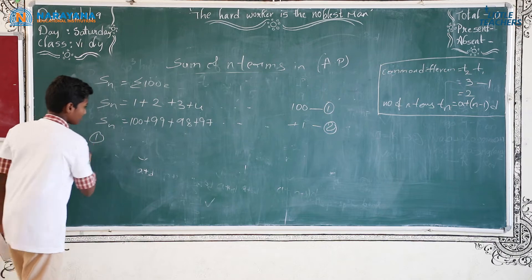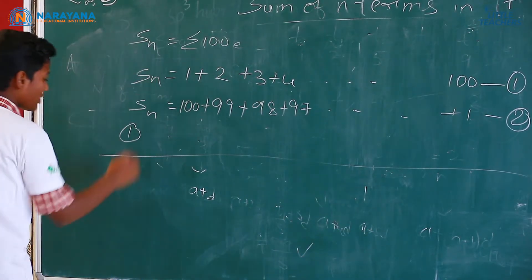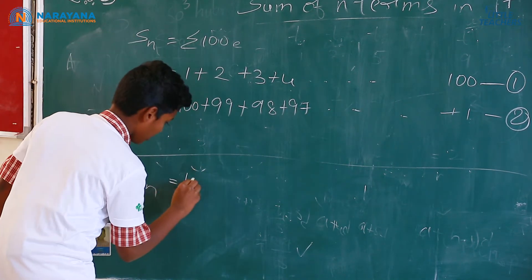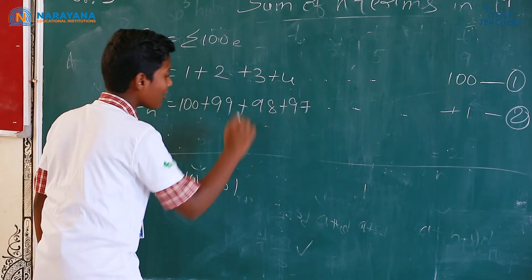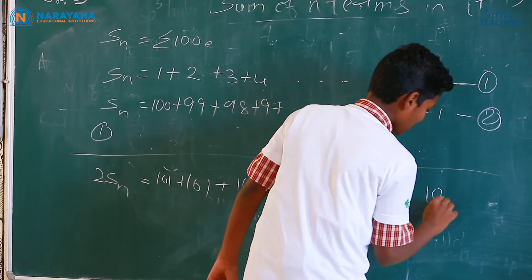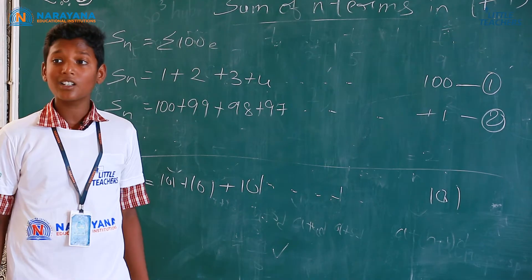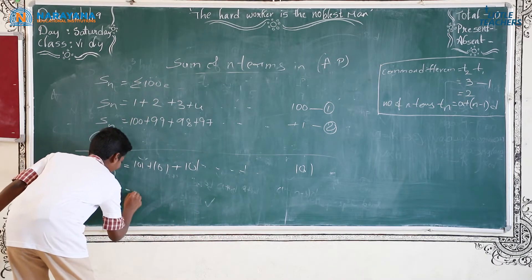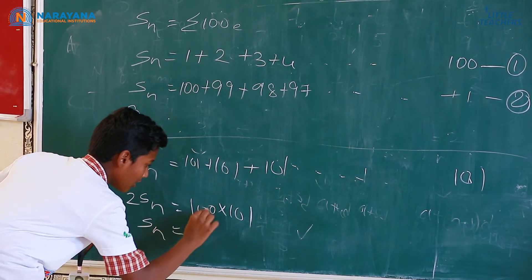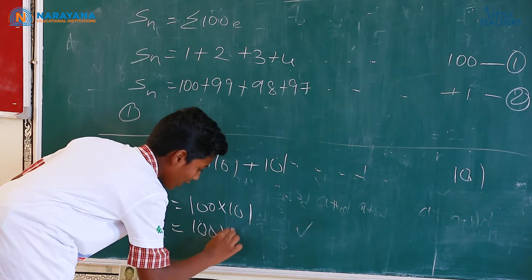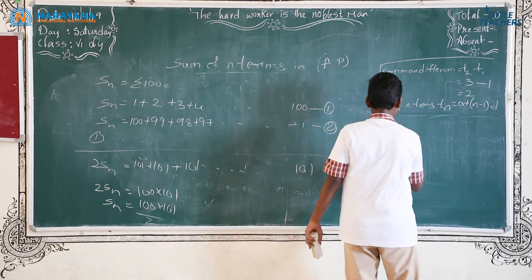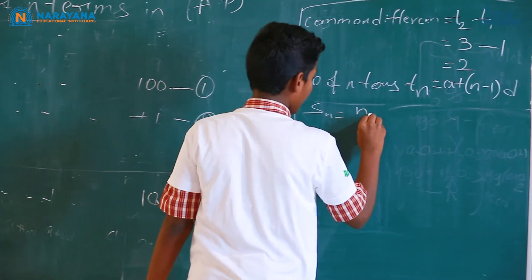Now add these two equations. We get 2Sn. Each pair adds up to 101: 1 plus 100, 2 plus 99, and so on — each gives 101. Sum of many additions is nothing but multiplication. So 2Sn equals 100 into 101. Therefore Sn equals 100 into 101 divided by 2. We got the sum of N terms formula: Sn equals N into N plus 1, divided by 2.